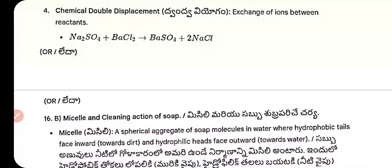4) Double displacement — exchange of ions between reactants: Na₂SO₄ + BaCl₂ → BaSO₄ + 2NaCl.